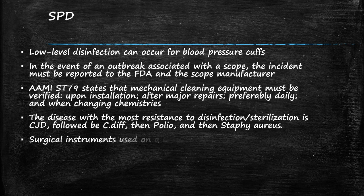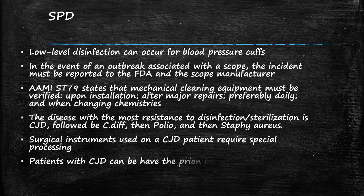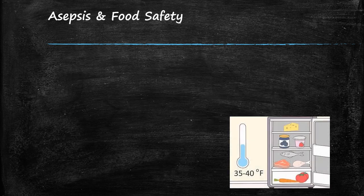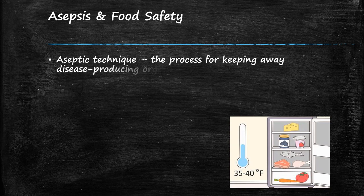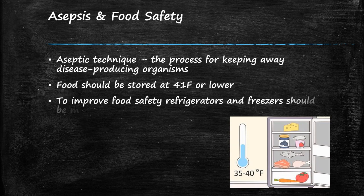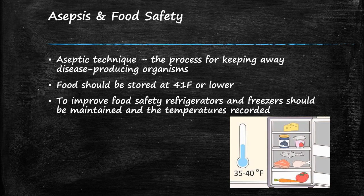Surgical instruments used on a CJD patient require special processing. Patients with CJD can have the prion in their brain and eye tissue. If it's passed to another patient, it is called iatrogenic CJD. Asepsis and food safety: aseptic technique is the process of keeping away disease-producing organisms. Food should be stored at 41 degrees Fahrenheit or lower. To improve food safety, refrigerators and freezers should be maintained and the temperatures recorded.